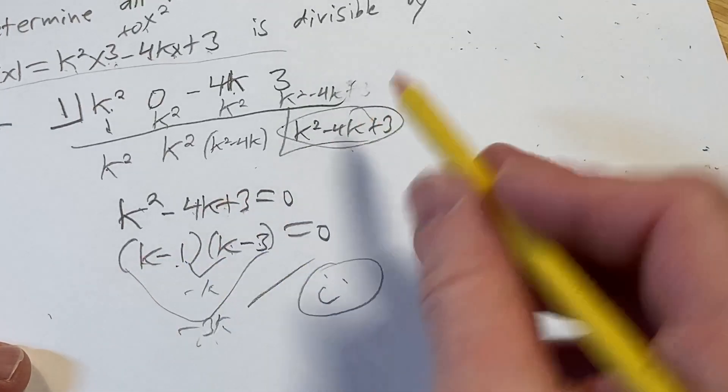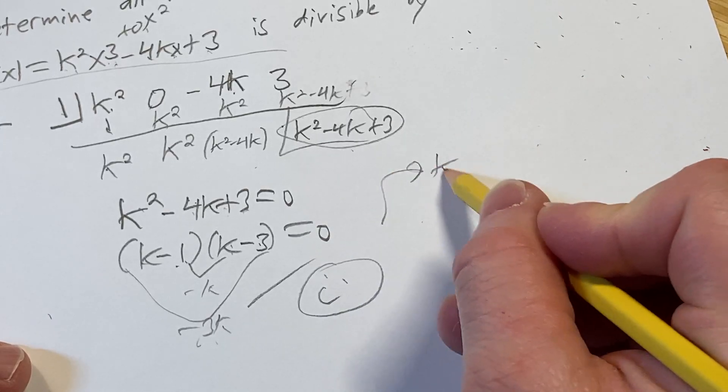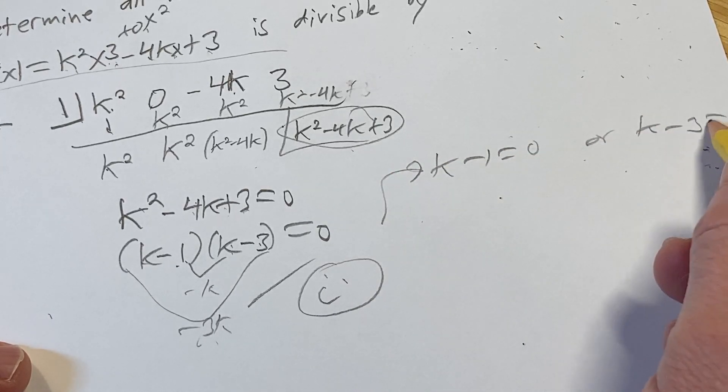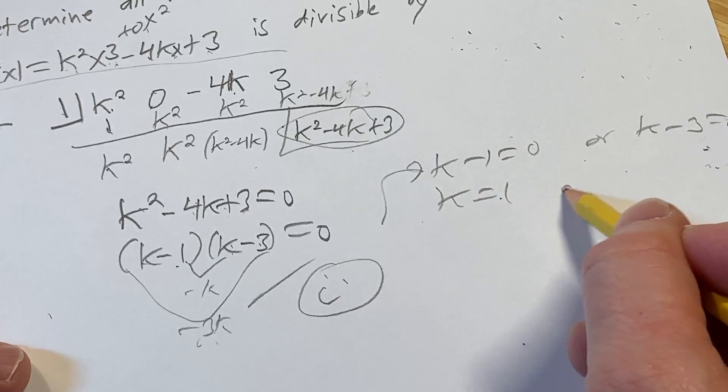So we have a product equal to 0. Therefore, k minus 1 is 0 or k minus 3 is 0. So k equals 1 or k equals 3.